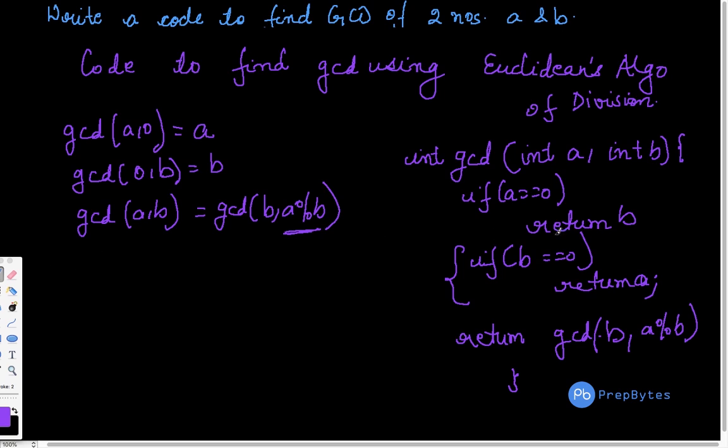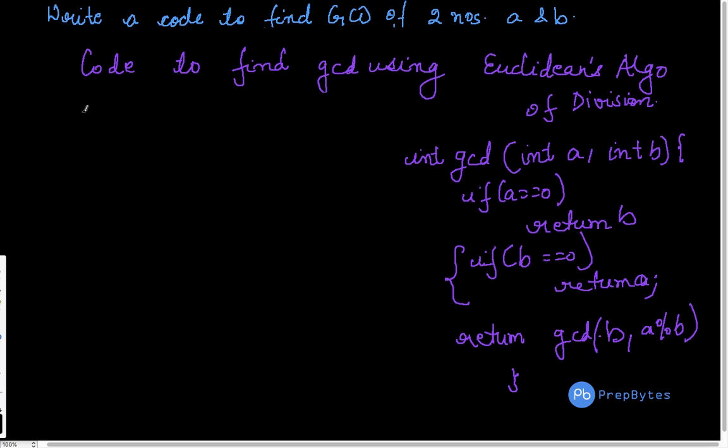So let's see whether this works for few test cases. So again taking the same test case, let's say A is 56 and B is 21. So initially A will get value 56, B as 21. None of these will be true. We come here.